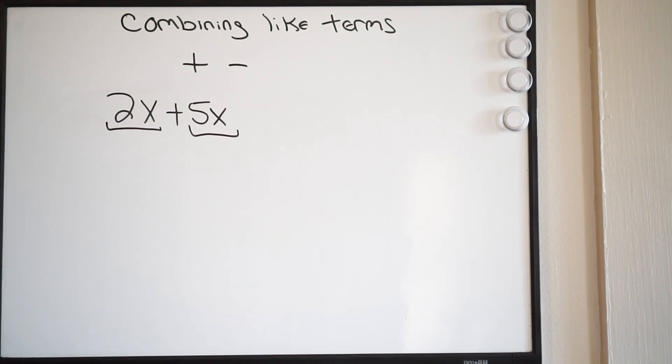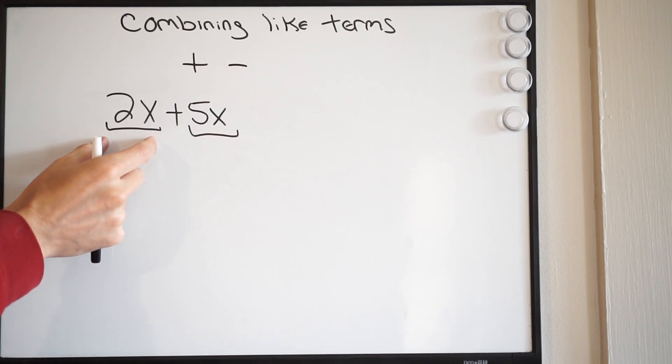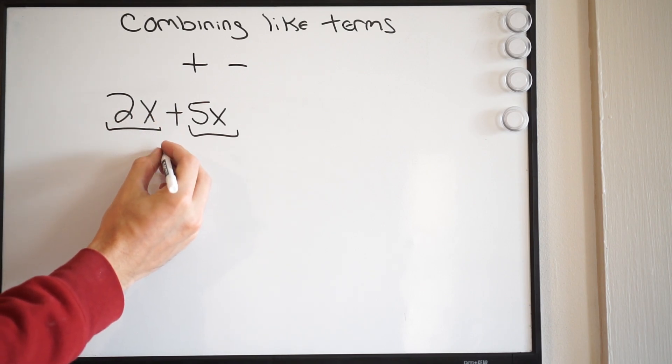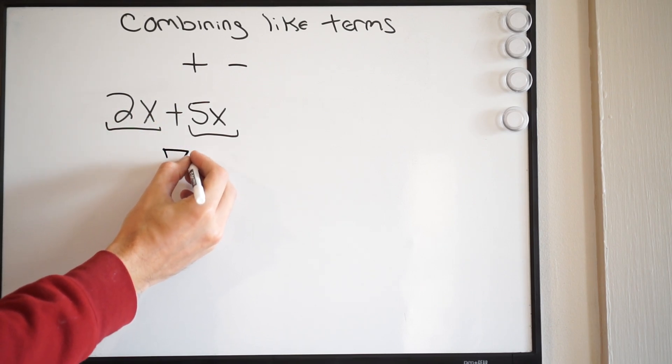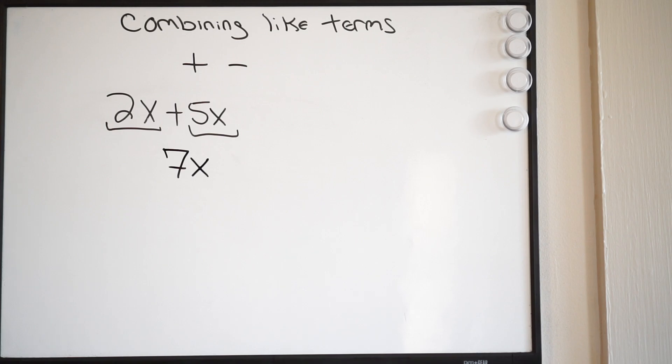And what it wants to do here is combine like terms. So we can see here that these are going to be like terms because notice the variable here, I have an x here and an x here, meaning I can combine them, and when I combine these, this is simply going to be 7x. That's combining like terms.